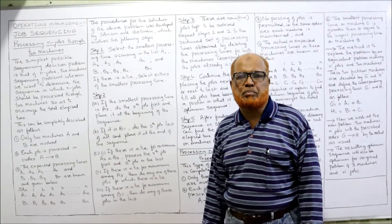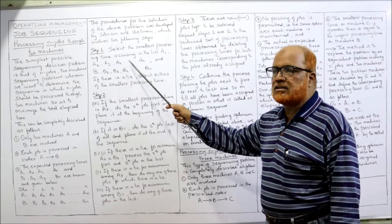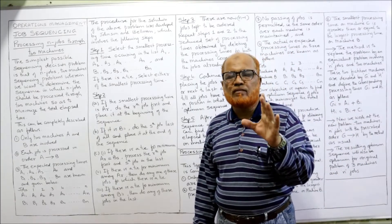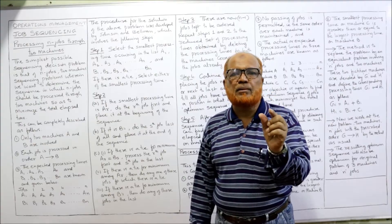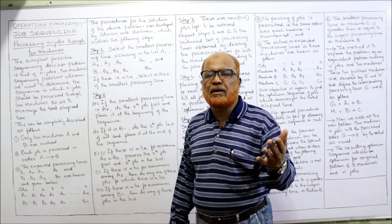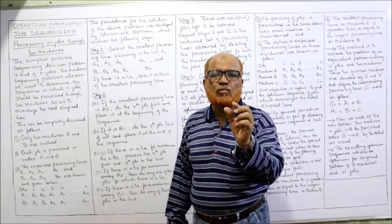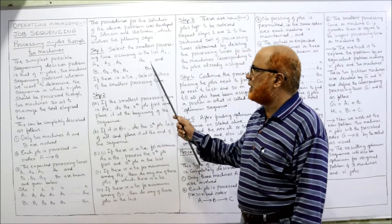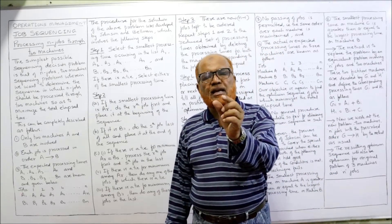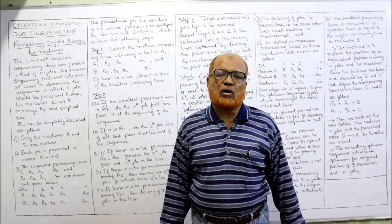Step 1: Select the smallest processing time occurring in the complete list — a1, a2, a3 up to an, and b1, b2, b3 up to bn. Find the smallest time among all jobs on machine A and machine B. It may occur on machine A or machine B. If the same minimum time appears on both machines, it is a tie — select either one.